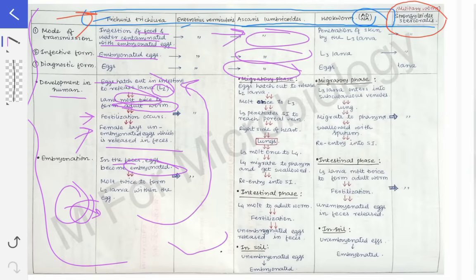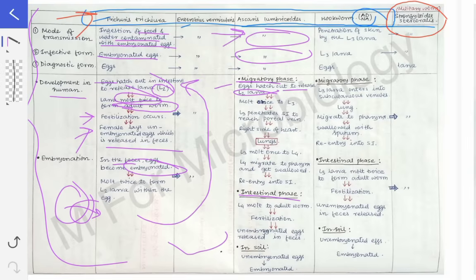In the development within the human, there are two stages for Ascaris: the migratory phase and the intestinal phase. As Ascaris lumbricoides, hookworm, and Strongyloides reside in the small intestine, they also get a chance to roam in other parts of the body, so they have a migratory phase. In Ascaris, the embryonated eggs are ingested, hatch out releasing L2 larvae, which molds once to produce L3 larvae. The L3 penetrates the small intestine to reach the portal vein and from there reaches the liver.